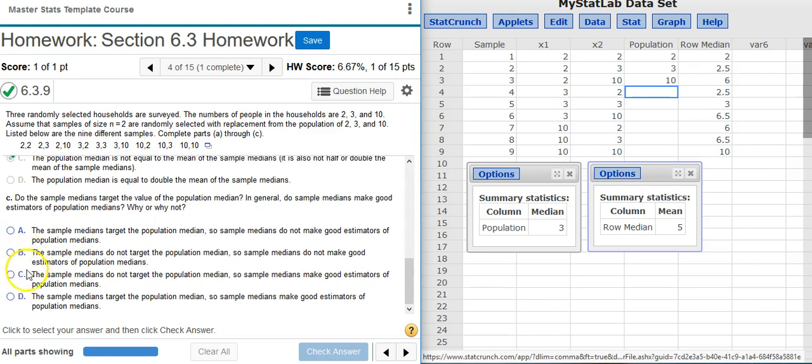Between answer options B and C, the difference is that in answer option B, it says sample medians make good estimators. Answer option C says sample medians do not make good estimators.